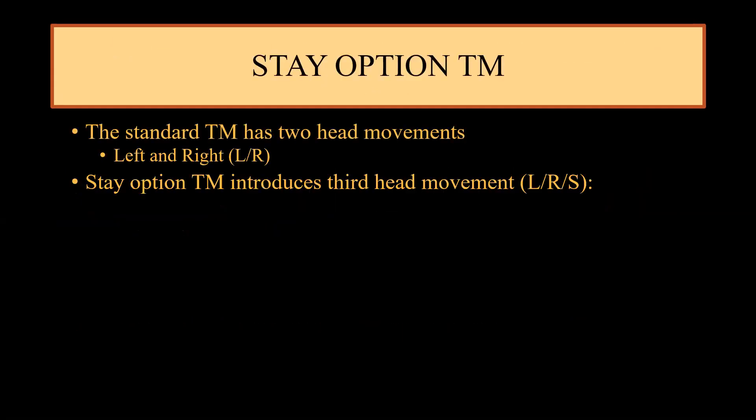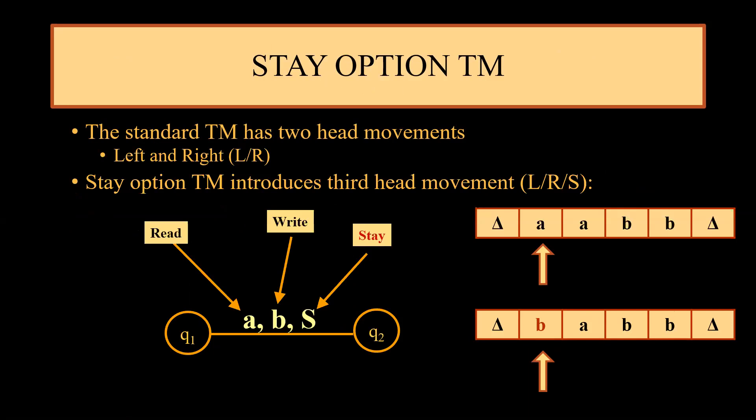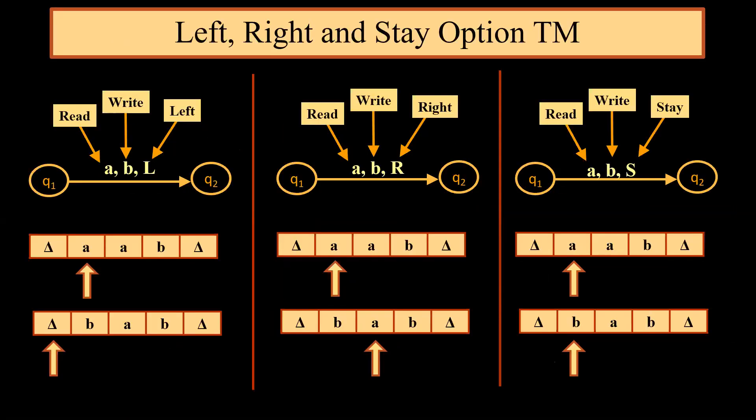We start with the first variant, that is stay option Turing machine. In the standard Turing machine we have two movements, one is towards the left and another is towards the right. In stay option Turing machine we introduce a third head movement, that is stay option. For example, we read A, we write B, we don't move towards left or right. Instead, the head remains at the same cell position itself. This slide shows first left movement: read A, write B, and move left. Next is read A, write B, and move right. Third is read A, write B, and stay there. That means the head will not move in left or right direction but it will stay as it is.